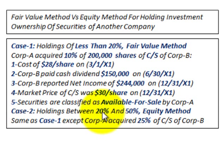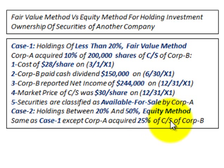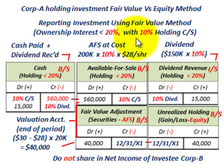In case two, this is where the holdings are between 20% and 50%, and this is where we use the equity method. We'll use the same example as case one, except that Corp A now acquired 25% of the common stock of Corp B, so they have a 25% investment in Corp B. Now let's go and look at our example.